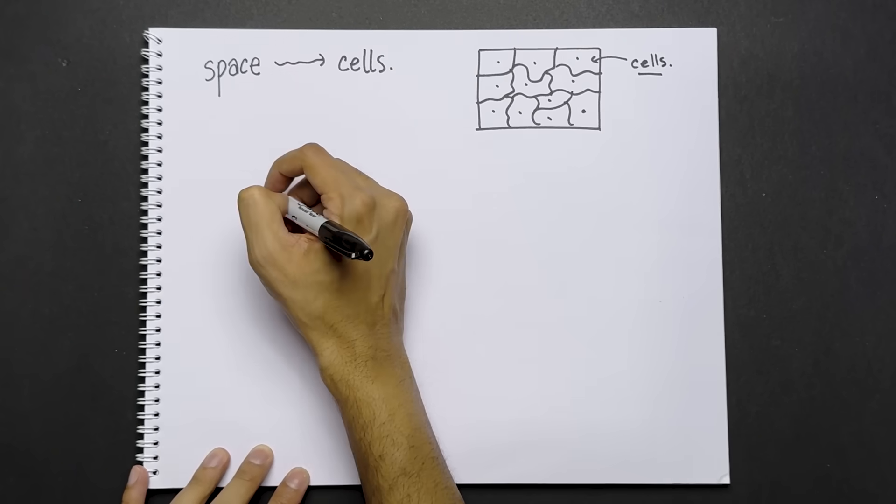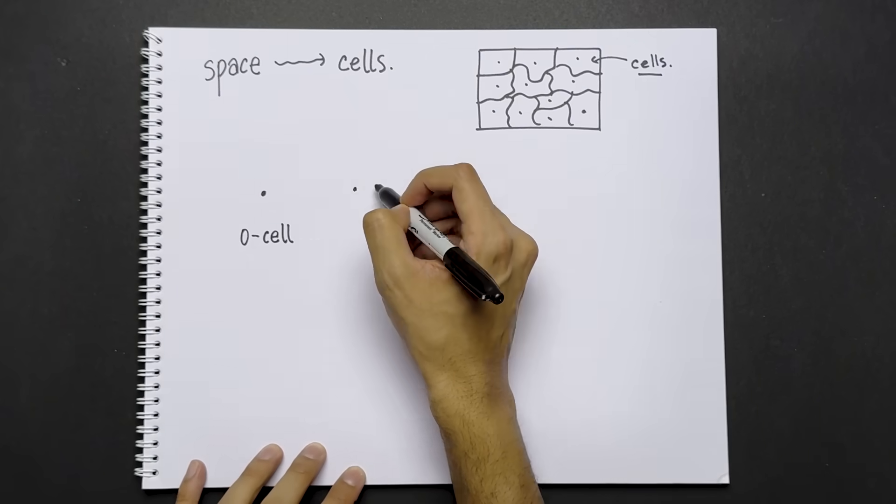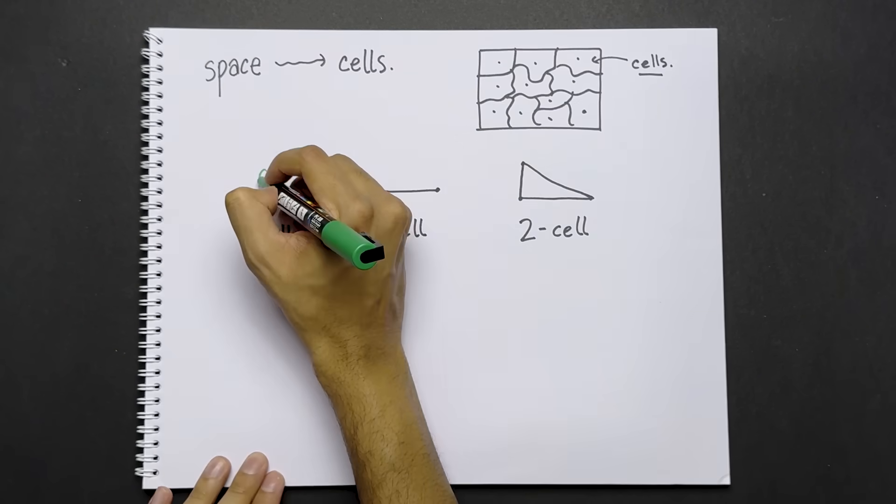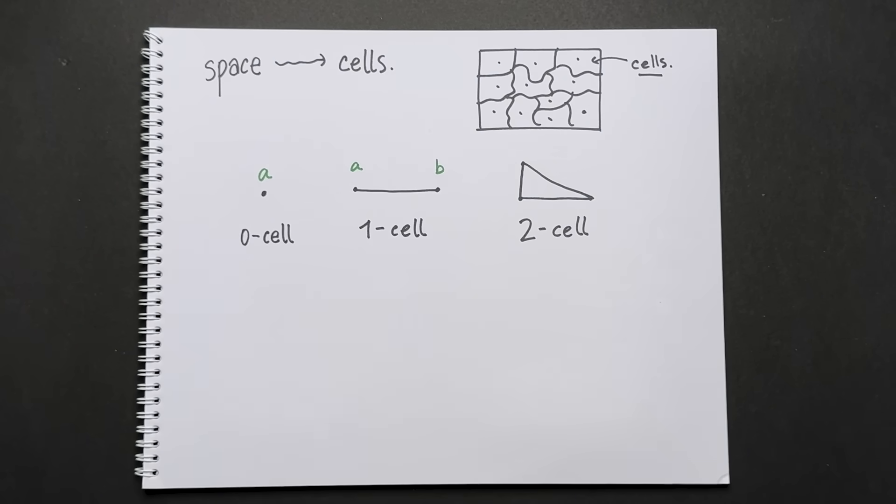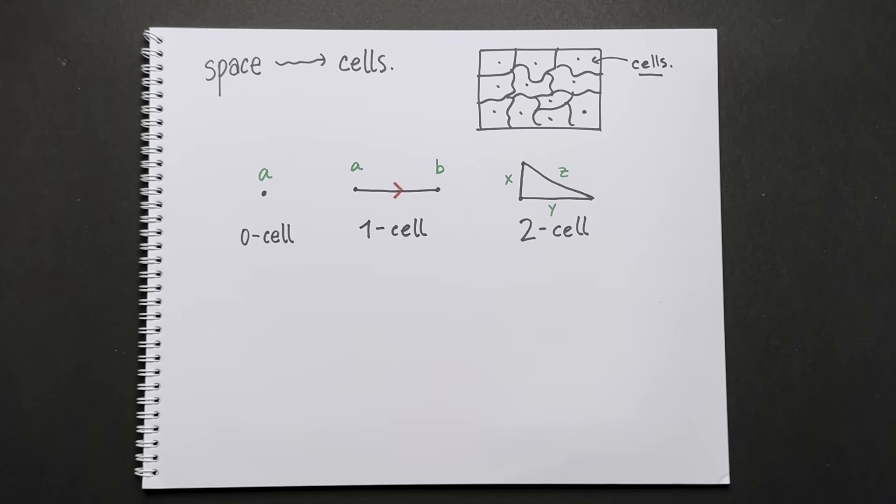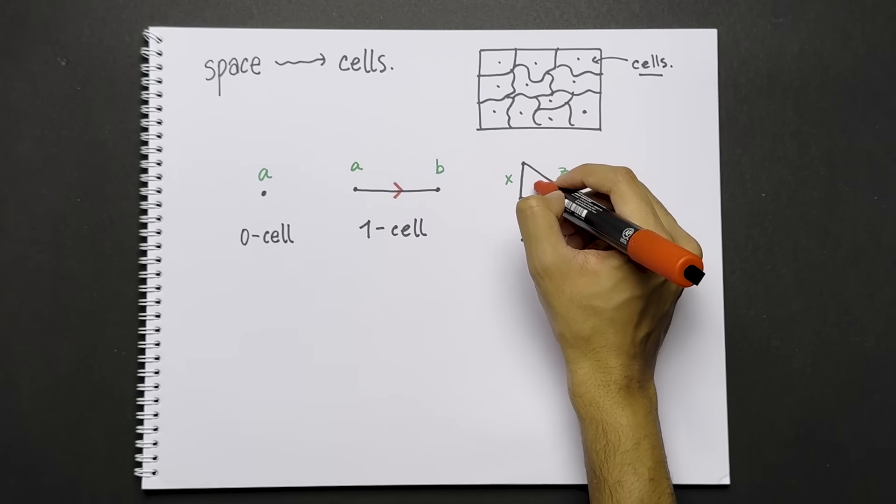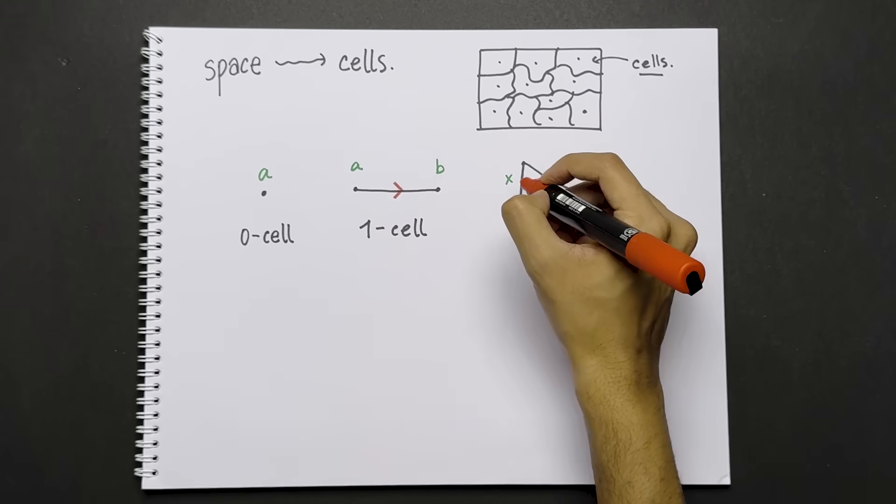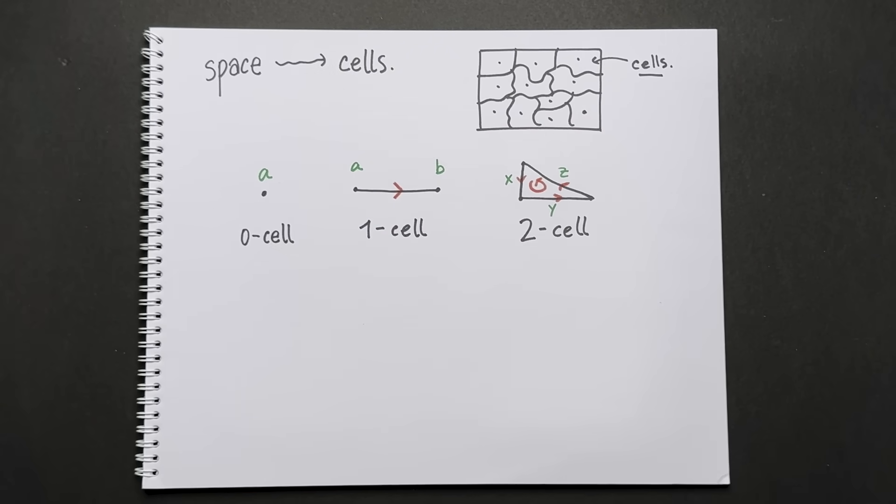What is a cell? A zero cell is a point. A one cell is a line. A two cell is a triangle. Let's label the vertices of the left two cells, as well as the sides of the rightmost cell. We need these cells to have orientations, which we denote by arrows. For example, we think of this one cell as starting at the left point and ending at the right point. An orientation for a two cell is a choice of arrow either going clockwise or counterclockwise, along with arrows for all the sides.